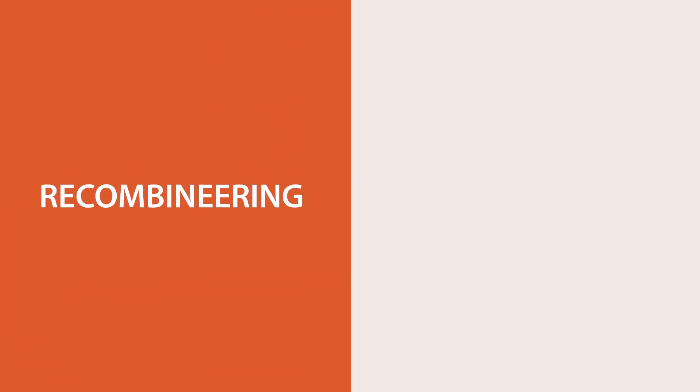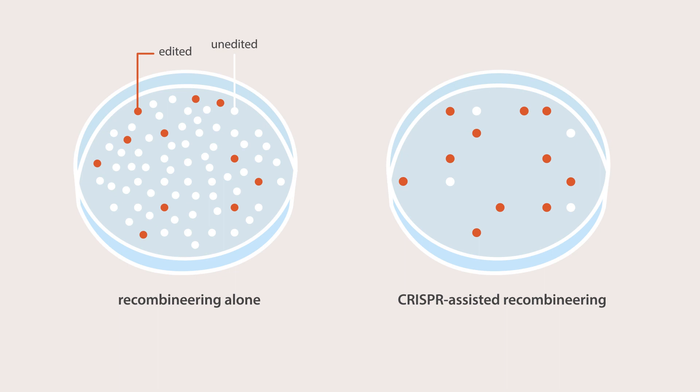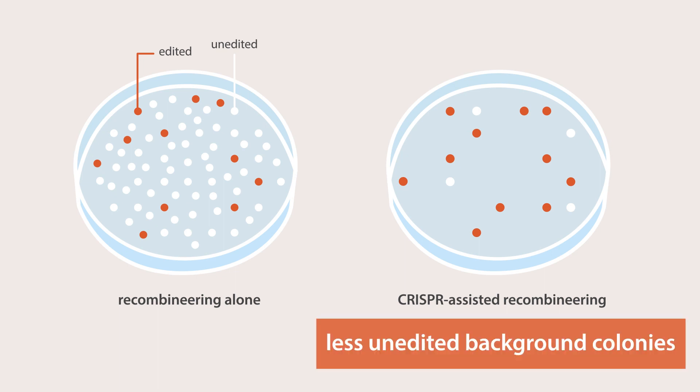With this combination of recombineering and CRISPR, the number of background unedited colonies can be greatly reduced in comparison to recombineering alone.